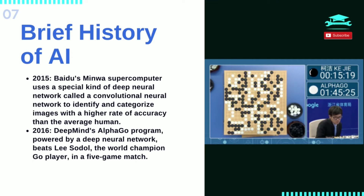In 2016, DeepMind's AlphaGo program, powered by a deep neural network, beat Lee Sedol, the world champion Go player, in a five-game match. The victory is significant given the huge number of possible moves as the game progresses. Later, Google purchased DeepMind for a reported $400 million.